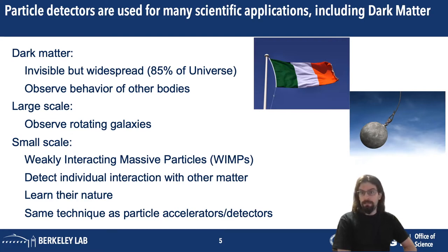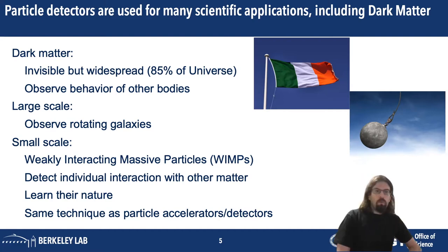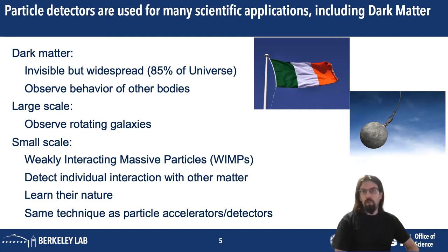But the question is: what is it? One of the major candidates is a Weakly Interacting Massive Particle, or WIMP. A WIMP is weakly interacting — it interacts only occasionally. We detect individual interactions with other matter in a particle detector. That's what the role of this apparatus is. When a weakly interacting particle comes in, it interacts with baryonic matter and we observe the results of that interaction.